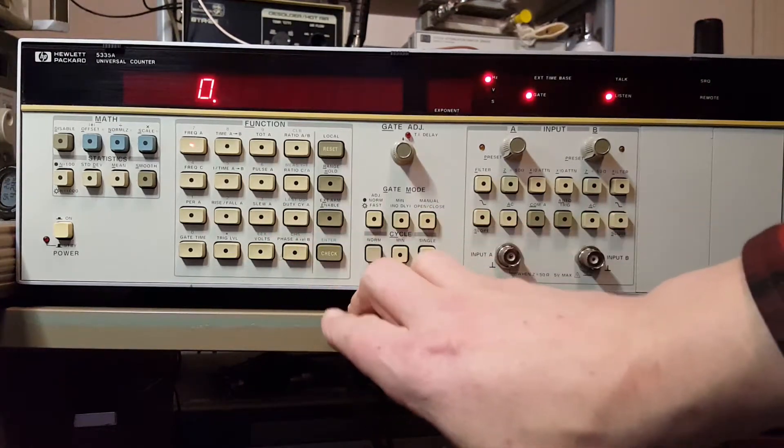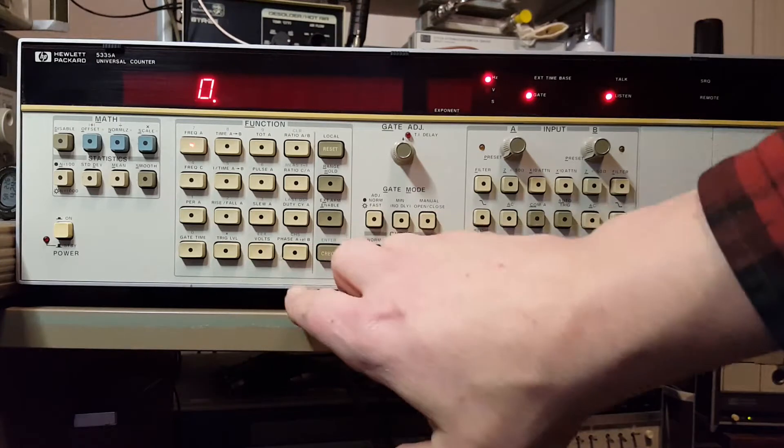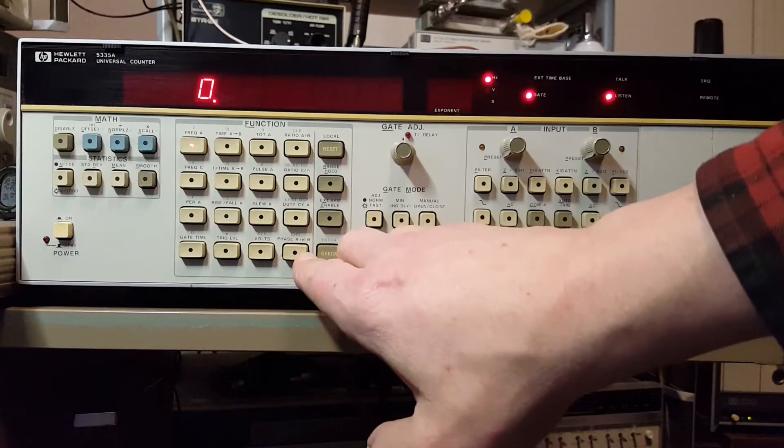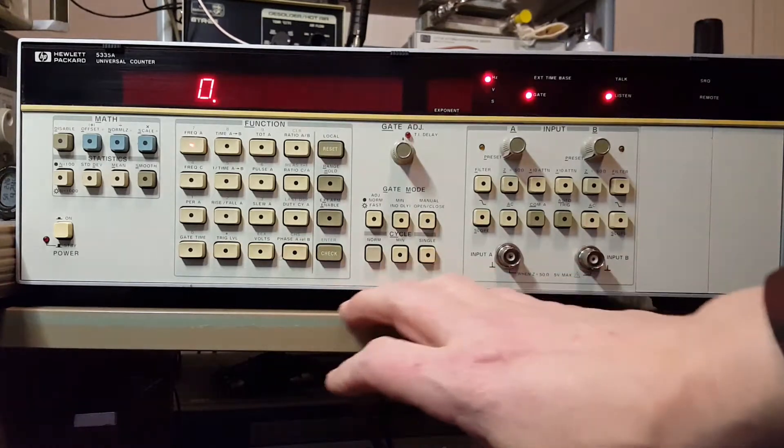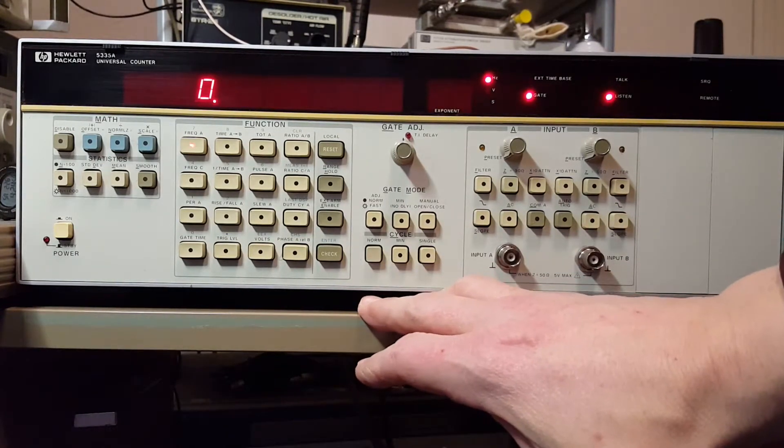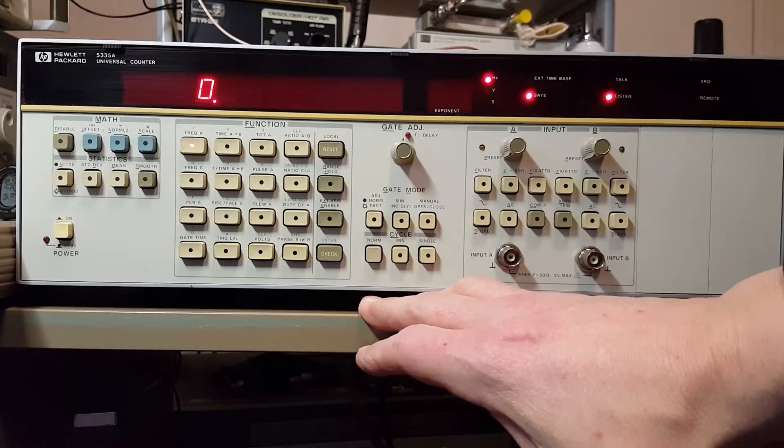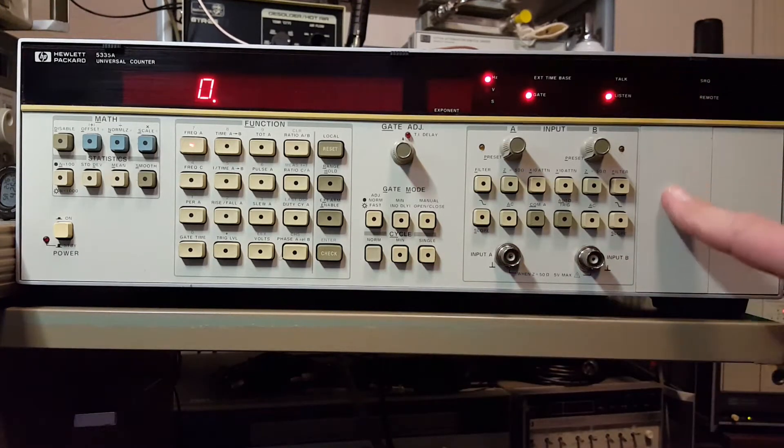It does pulse. It does slew rate. It does phase comparison between A channel and B channel. But it has some features that my other counter has that this doesn't, of course, which is it's missing the C channel. It's missing the voltmeter.